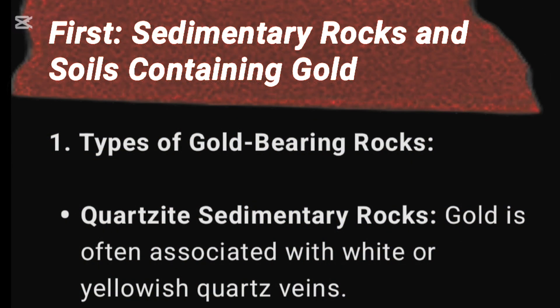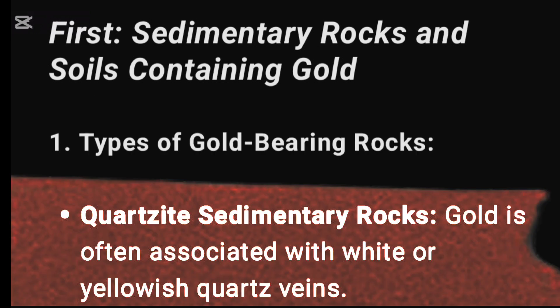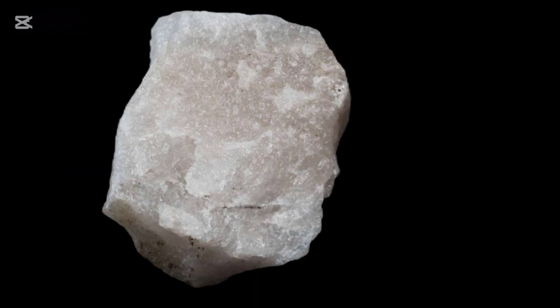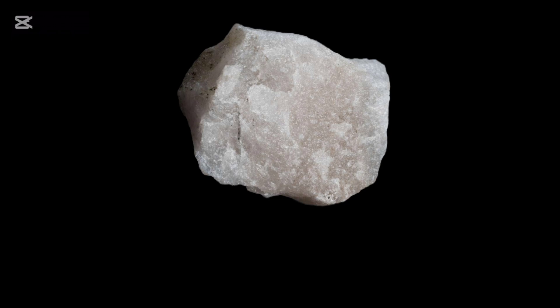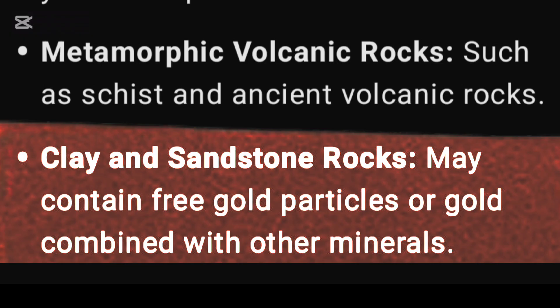Sedimentary rocks and soils containing gold. Types of gold-bearing rocks: Quartzite sedimentary rocks — gold is often associated with white or yellowish quartz veins. Metamorphic and volcanic rocks such as schist and ancient volcanic rocks. Clay and sandstone rocks may contain free-gold particles or gold combined with other minerals.